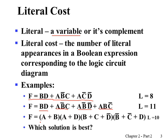For another function expression, counting the literals gives a literal cost of 10. So if those three are the same identical functions, then we can easily tell that the first one has the lowest literal cost, so it's the best design.